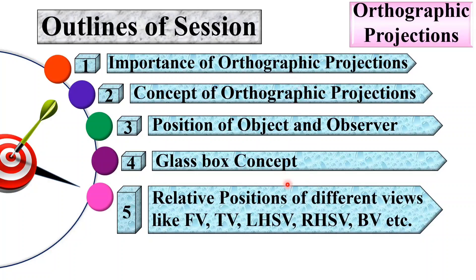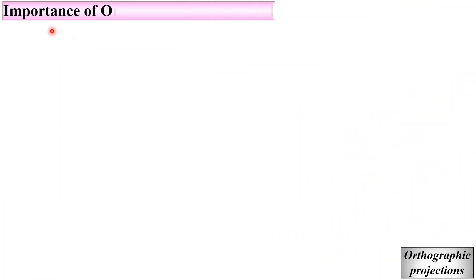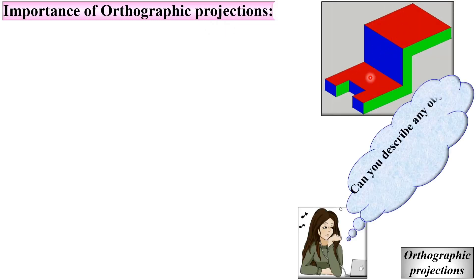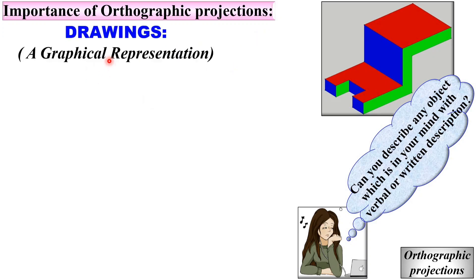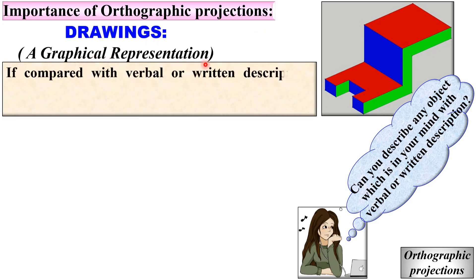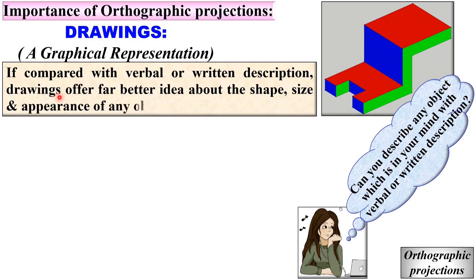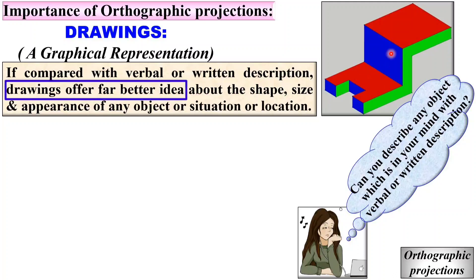Let us see one by one all these points. First, the importance of orthographic projections. Can you describe any object which is in your mind with verbal or written description? Definitely no. Drawing is actually a graphical representation. Compared with verbal or written description, drawings offer a far better idea about the shape, size, and appearance of any object or situation or location.